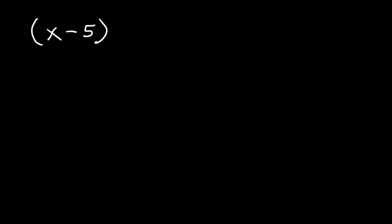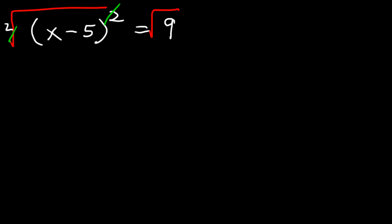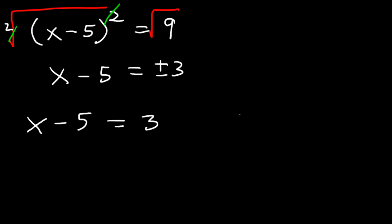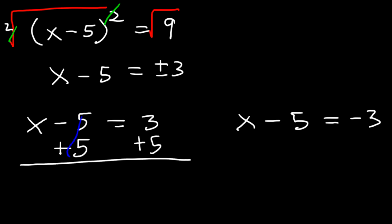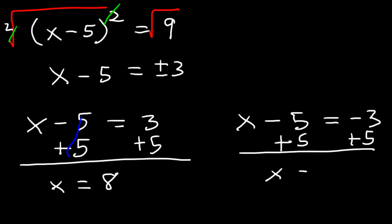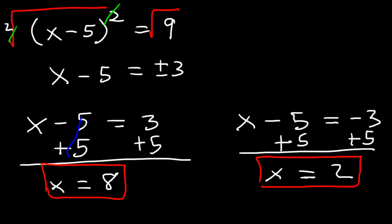Try this one: x minus 5, squared, is equal to 9. The first thing we do is take the square root of both sides. The square and square root cancel on the left, leaving x minus 5, and the square root of 9 is plus or minus 3. So x minus 5 equals positive 3, and x minus 5 equals negative 3. Adding 5 to both sides: 3 plus 5 is 8, and negative 3 plus 5 is 2. So x equals 8 and x equals 2.